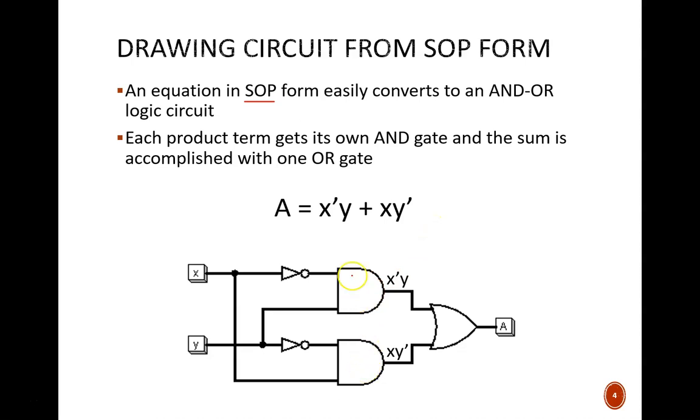The first product term is X' Y, so the inputs to the corresponding AND gate are X' - the prime is achieved with the NOT gate - and Y taken straight from the input. Very similarly, the second product term X Y' is equivalent to this other AND gate.